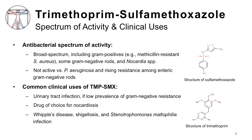Trimethoprim-sulfamethoxazole is a synergistic combination of two folate synthesis inhibitors. With regard to clinical uses, this drug used to be one of the mainstays of therapy for urinary tract infection, and still is in areas with low prevalence of gram-negative rod resistance. However, its widespread use has been impacted by a dramatic rise in resistance over recent years, especially among E. coli isolates. TMP-SMX is also used in a few uncommon infectious diseases, such as Whipple's disease, Shigellosis, and infections caused by Stenotrophomonas maltophilia, which causes nosocomial pneumonia and other nosocomial infections.